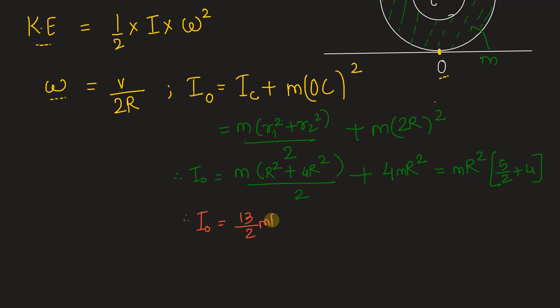13 by 2 mR square and omega we already found out v by 2R. Let's substitute this to find out the kinetic energy.